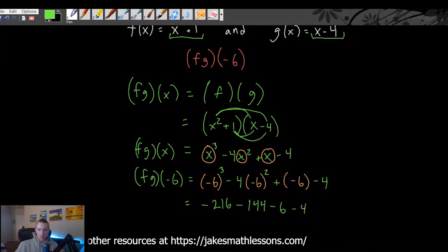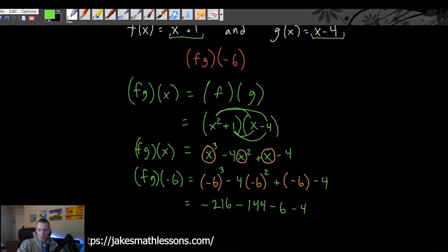So now we can basically just add all these up here. So negative 216 minus 144 minus 6 minus 4 is going to give us negative 370. And that's going to be f times g of negative 6.